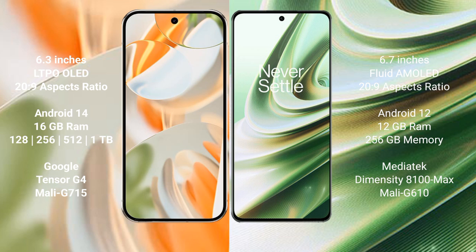The Google Pixel 9 Pro comes with 16GB RAM and 256GB internal storage, powered by the Google Tensor G4 processor with Mali-715 GPU. The OnePlus 10R comes with 12GB RAM and 256GB internal storage.